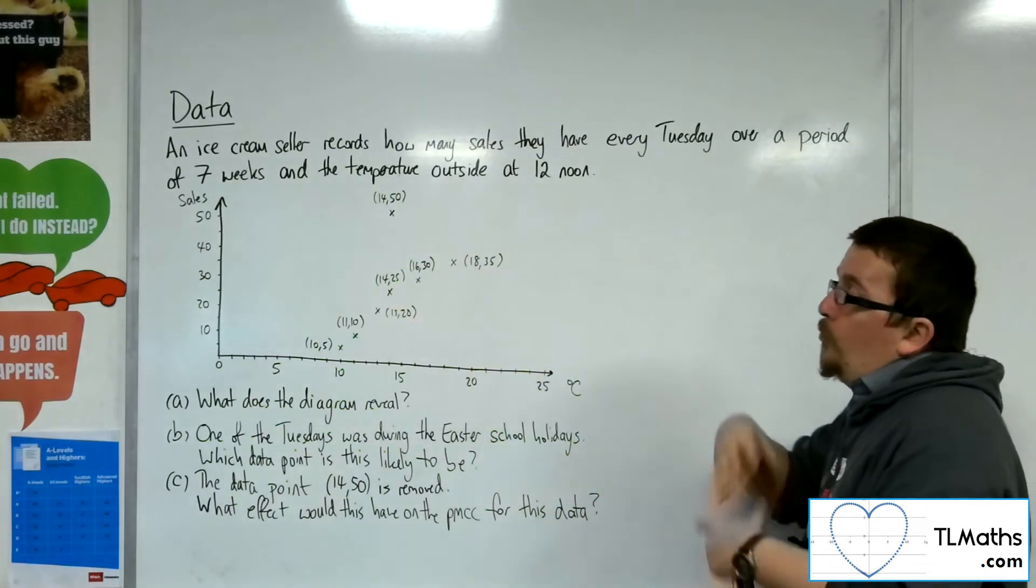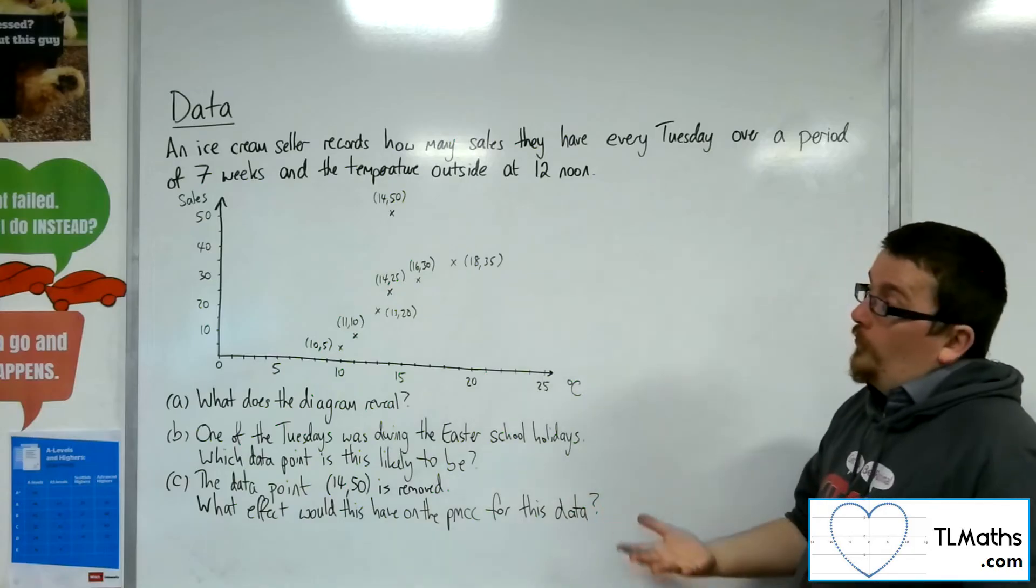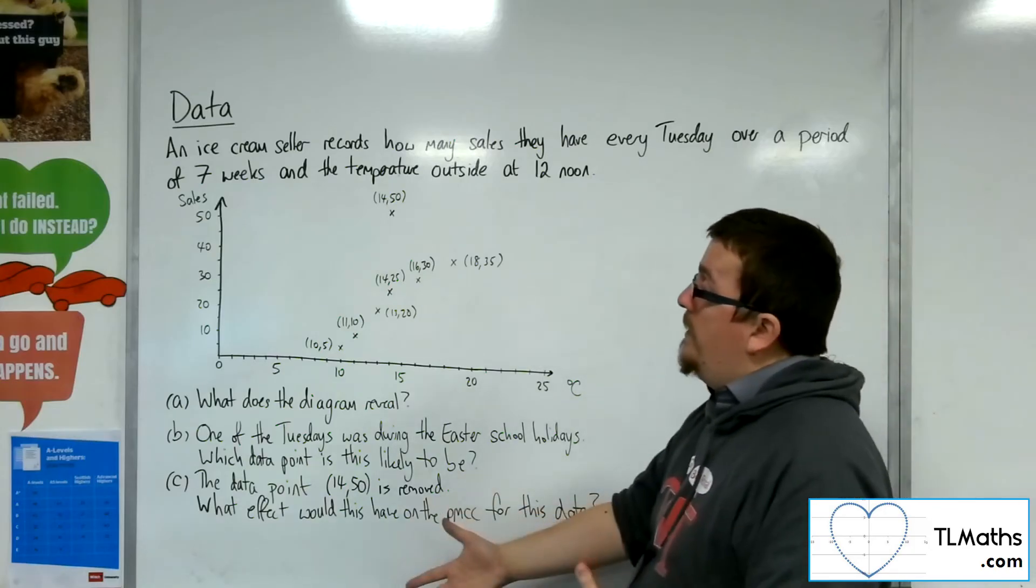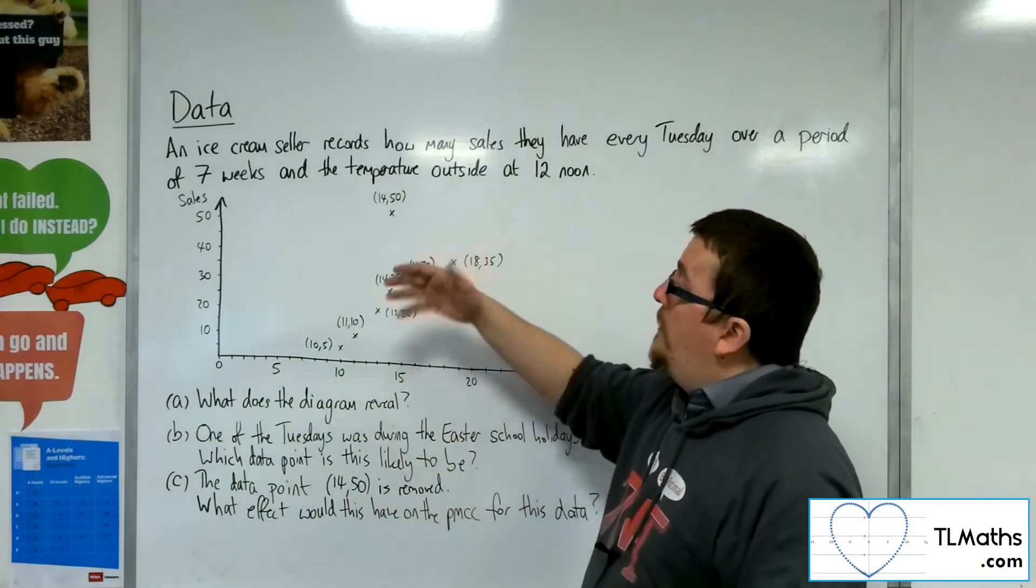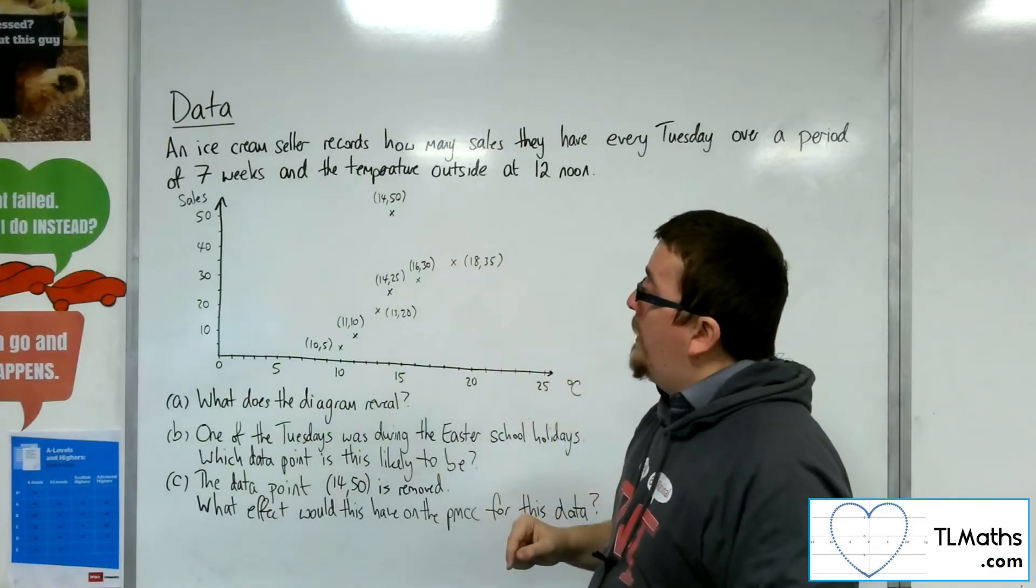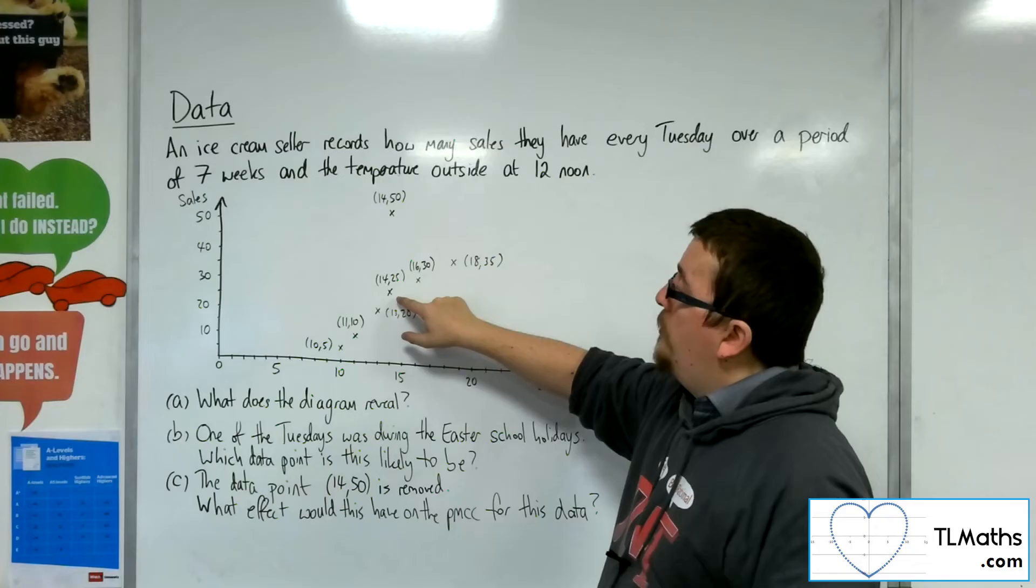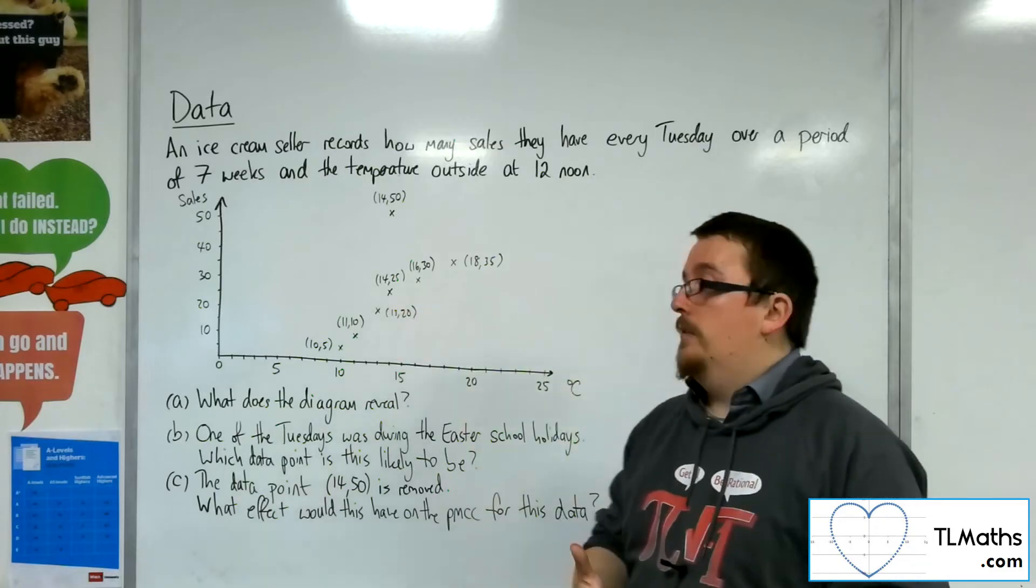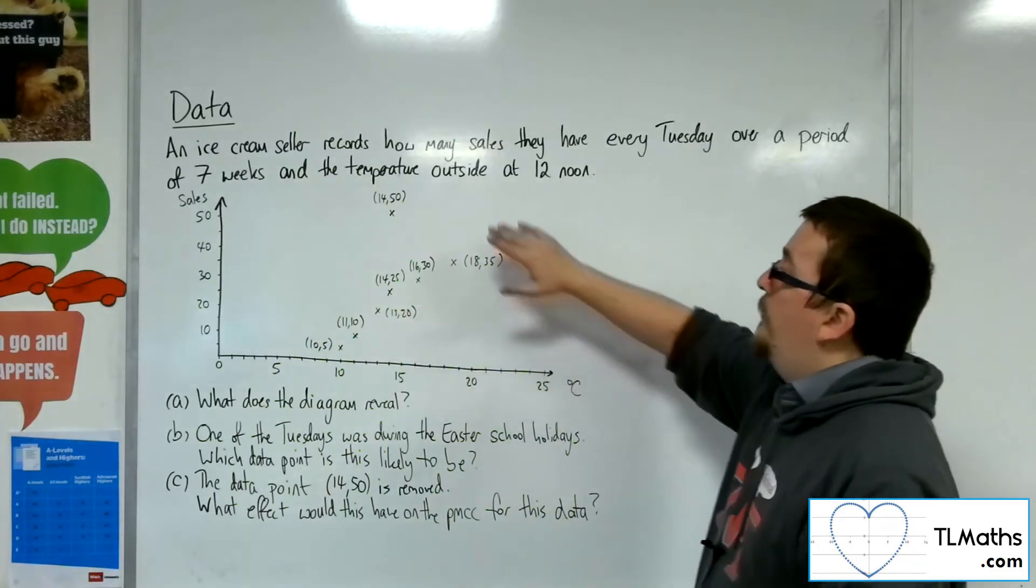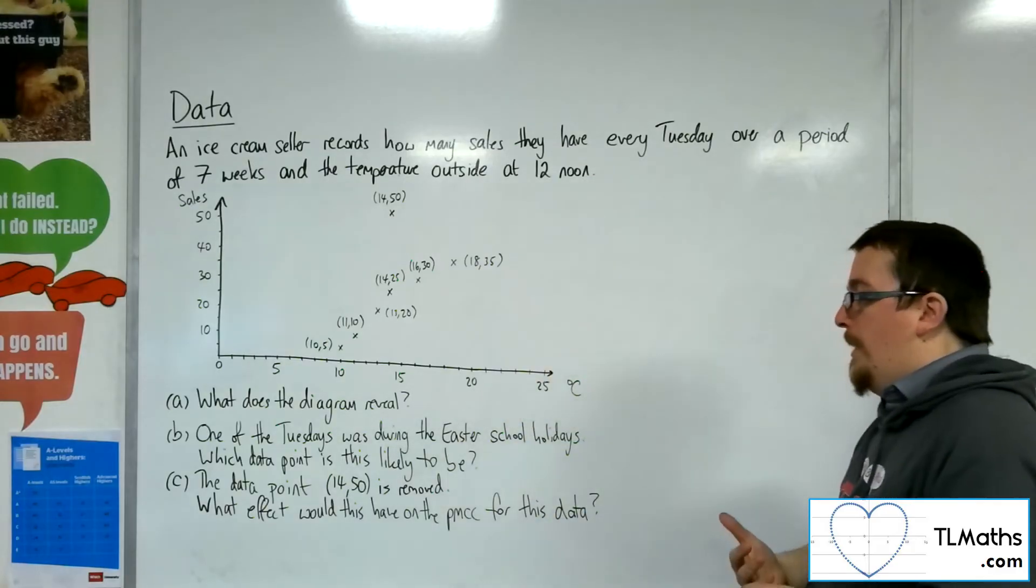The temperature wasn't so warm. I mean, it was 14 degrees centigrade, which is all right, but there were certainly more sales that we would probably expect because the other Tuesday that it was 14 degrees centigrade, there was only half as many sales. So it makes sense that that one is the one that we're talking about in part B.